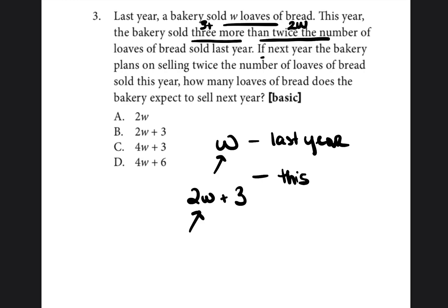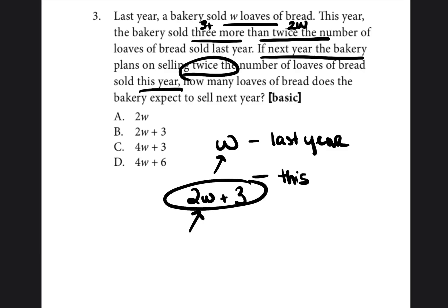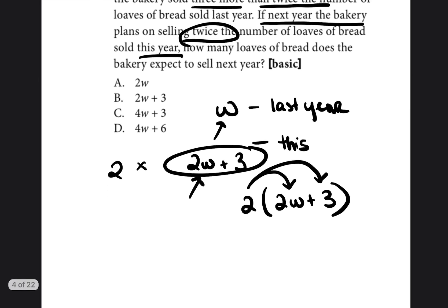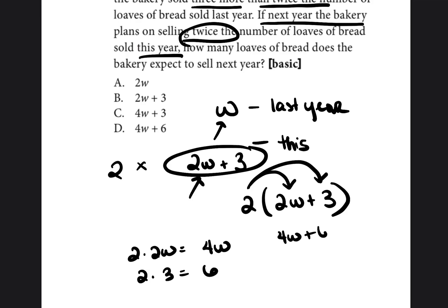Now they're asking: if next year the bakery sells twice the amount they sold this year, how much did they sell? So two times (2W + 3) can be written using the distributive property — two times 2W is 4W, and two times three is six. So it would be 4W plus six.